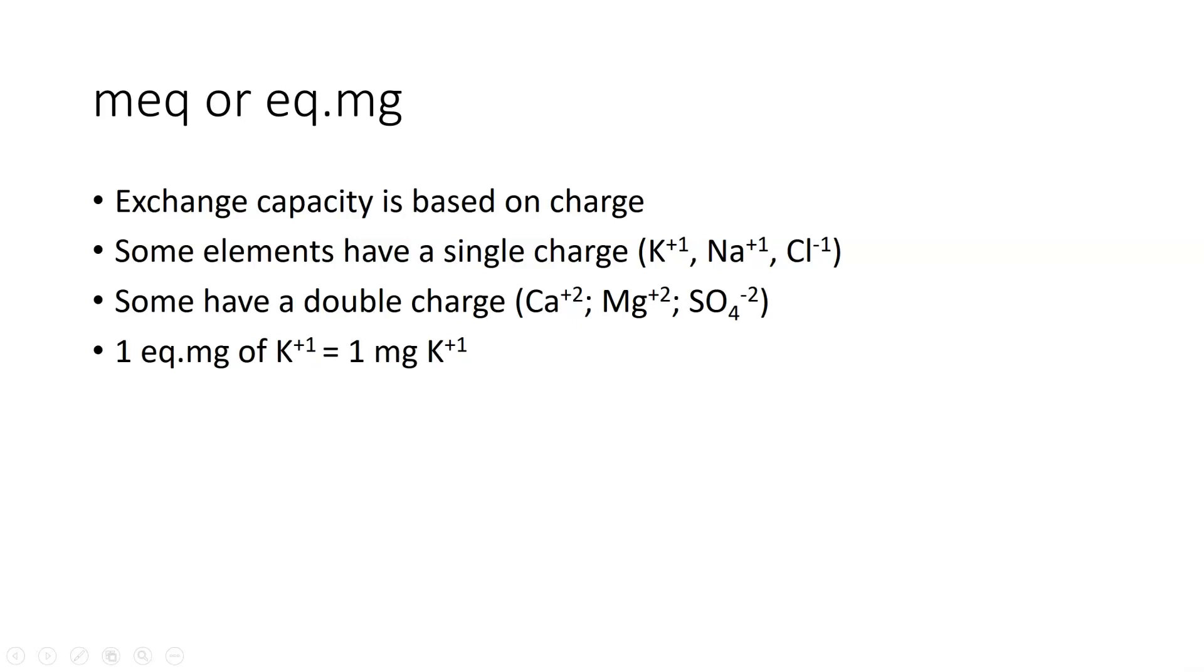One equivalent milligram of potassium is one milligram of potassium. What we're looking at is charge. If we have something like calcium, one equivalent milligram of calcium is actually one half milligram of calcium ions. What we're looking at is charge. In one half milligram of calcium ions, you have the same amount of charge as you will in one milligram of potassium. When we talk about equivalent milligrams in soil, we're looking at how material is picked up and how material is moved around. It's based on charge.